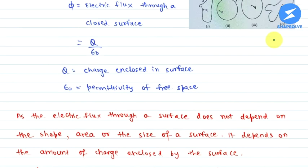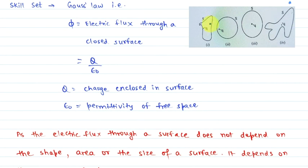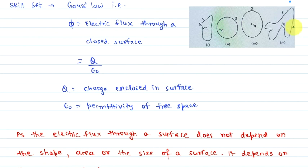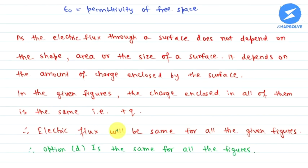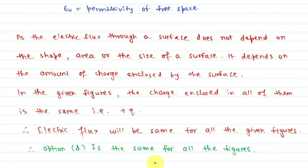All 4 surfaces enclose the same charge, so the electric flux is the same for all of them. Therefore, option D is correct. I hope you understood the explanation.